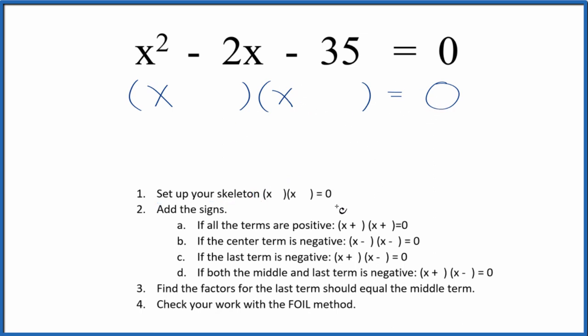Next, we're going to add signs to the skeleton equation. We have a negative and a negative. If both the middle term and the last term are negative, we'll set the signs up like this. We'll put a positive here and a negative here.